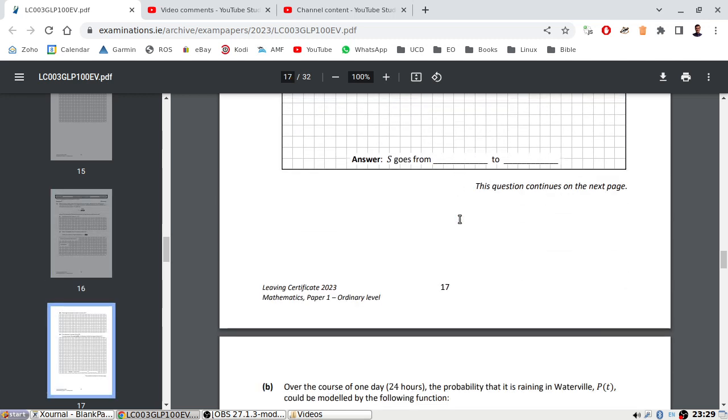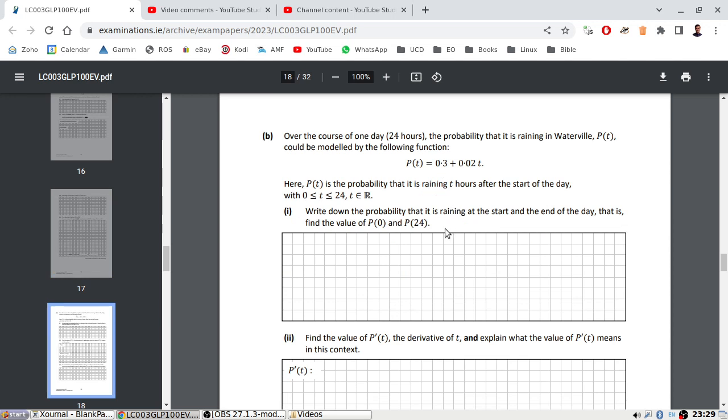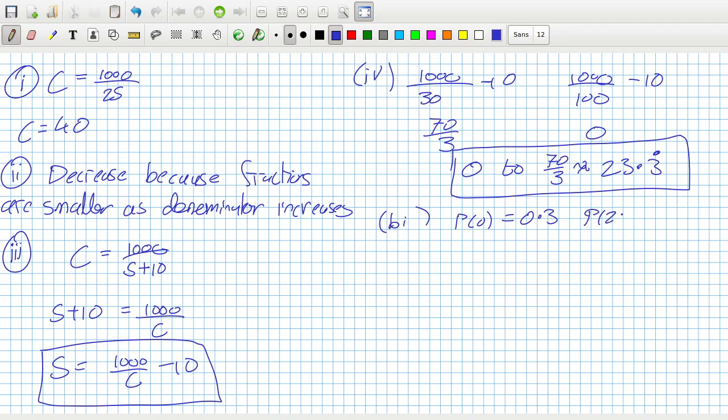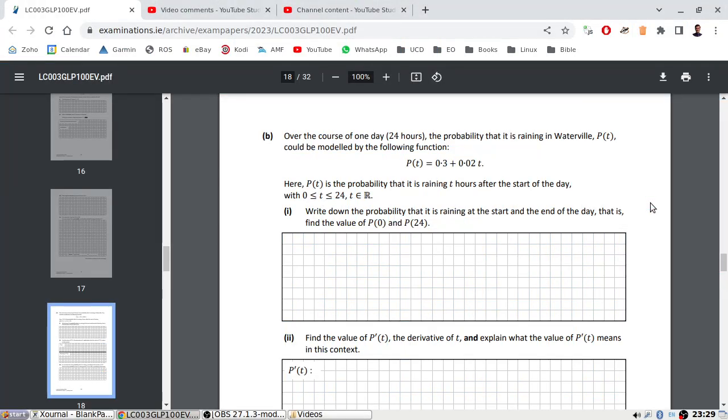Over the course of one day, the probability that it is raining in Waterfall can be modeled by this function, where t is between 0 and 24. Write down the probability that it's raining at the start and the end of the day. P(0), we just sub in zero, we get 0.3. And P(24), we just sub in 24: 0.3 plus 0.02 times 24, and that's 0.78.